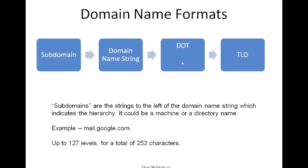The domain name format consists of the top-level domain on the far right, the dot, and the domain name string. You can add complexity by looking at what's further to the left — subdomains, which are strings to the left of the domain name string and part of the hierarchy. A subdomain could be a machine or a directory name. For example, a common thing you might see at Gmail is mail.google.com. You can have up to 127 different levels for a total of 253 characters.